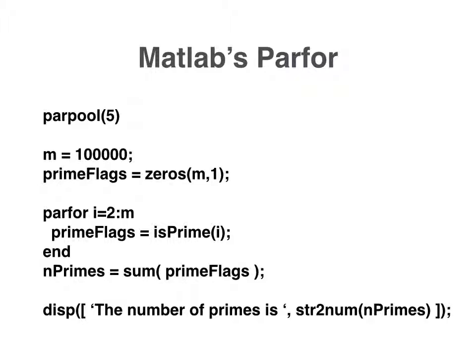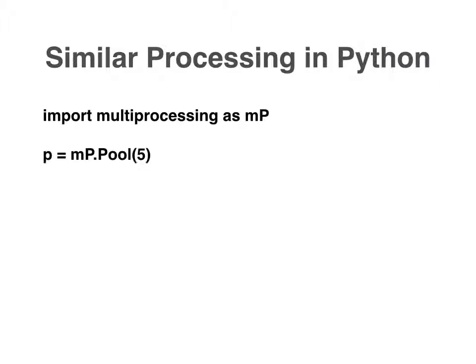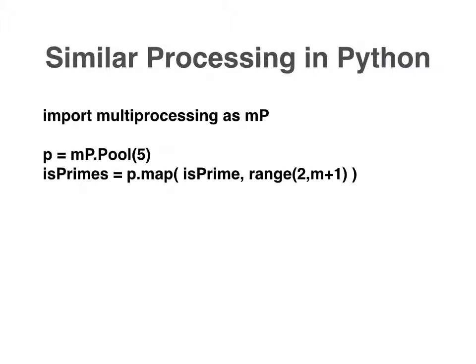So how can we get a speedup like this in Python? The answer is by using Python's multiprocessing package, which I've imported here. We call the multiprocessing package's pool function and here I've done so to create five processing threads. We can then call the pool's map function.